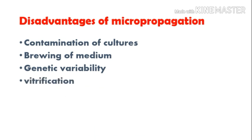The fourth disadvantage is vitrification. During the course of repeated in vitro shoot multiplication, the cultures exhibit water-soaked or almost translucent leaves. Such shoots cannot grow and may even die. This phenomenon is referred to as vitrification. Vitrification may be prevented by increasing the agar concentration from 0.6 to 1 percent in the medium; however, increased agar concentration reduces the growth rate of tissues.